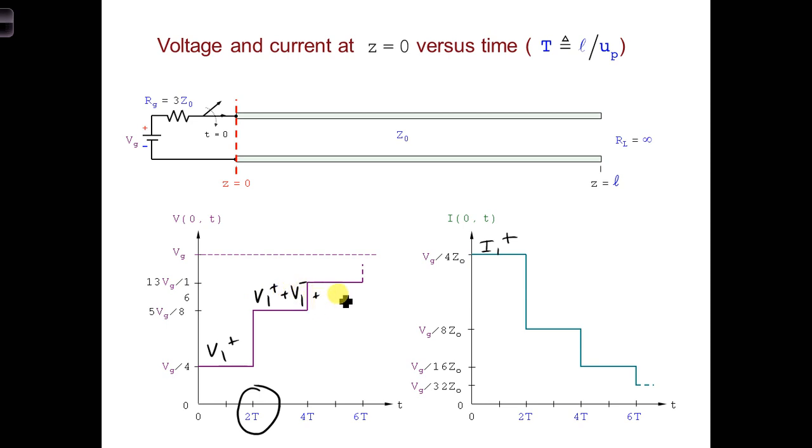And plus, don't forget that V2 plus that's created as soon as the V1 minus wave reaches the generator. And similarly for the current.